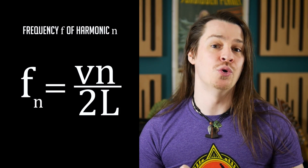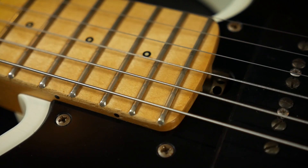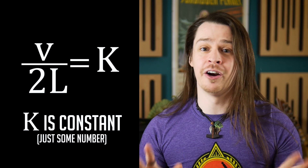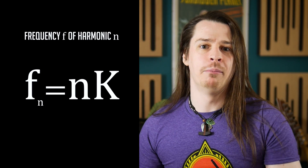Combining our equations, we can see that frequency equals vn upon 2L. Now if we assume that string tension remains constant — that is, we're not bending strings, diving the whammy bar, or applying vibrato of any kind — then v also remains constant. In fact, so does everything else in our equation. So if we only change n, the order of the harmonic, then frequency must be a function of n.